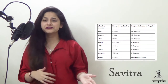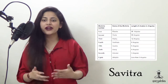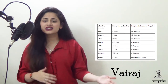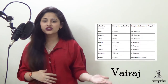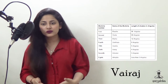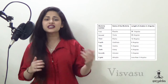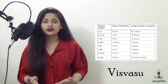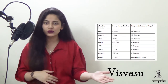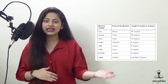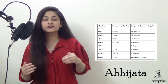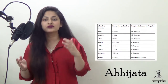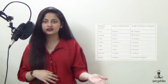The fifth is Savitra with a shadow length of 5 angulas. The sixth being Vairaj with 4 angulas shadow length. The seventh Muhurta is Vishwasu with a shadow length of 3 angulas. And eighth is the Abhijata, which has a shadow length of less than 3 angulas.